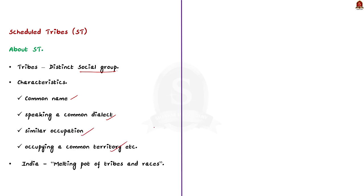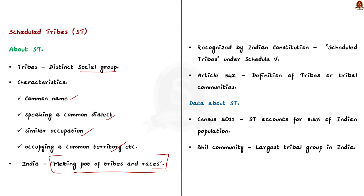India is often called the melting pot of tribes and races. Many communities are recognized by the Indian Constitution as Scheduled Tribes under Schedule 5. They are defined as tribes or tribal communities under Article 342 of the Indian Constitution. As per the census of 2011, Scheduled Tribes make up 8.2% of India's population.